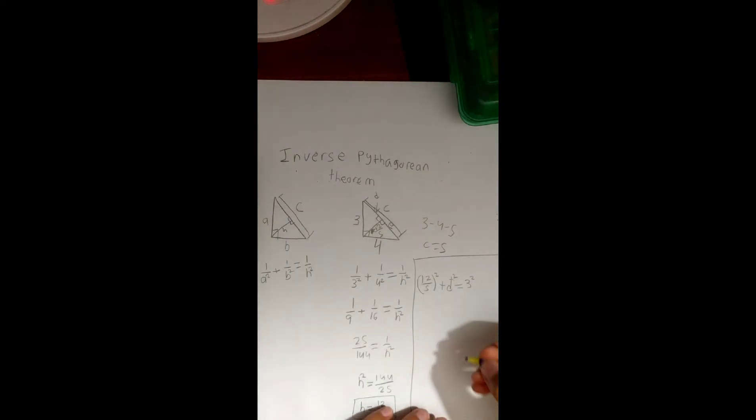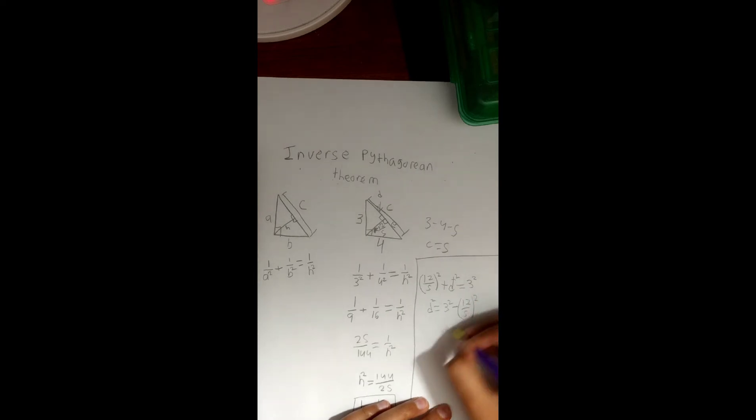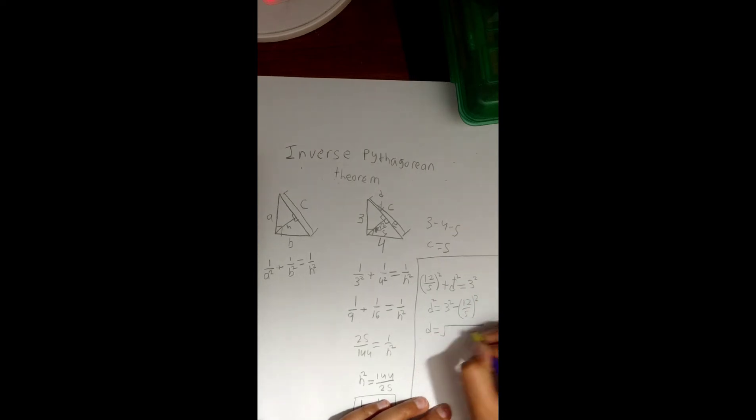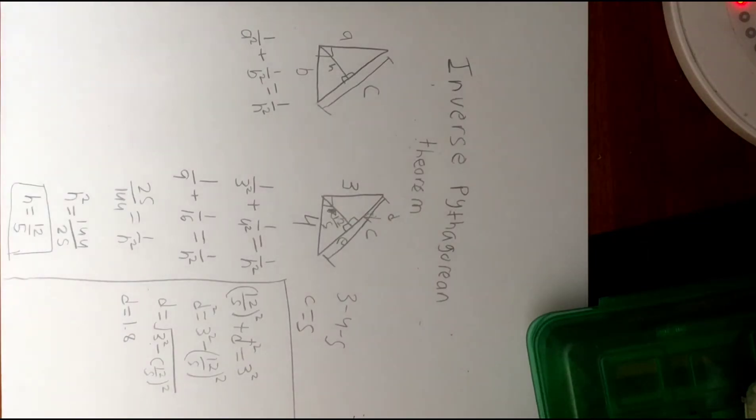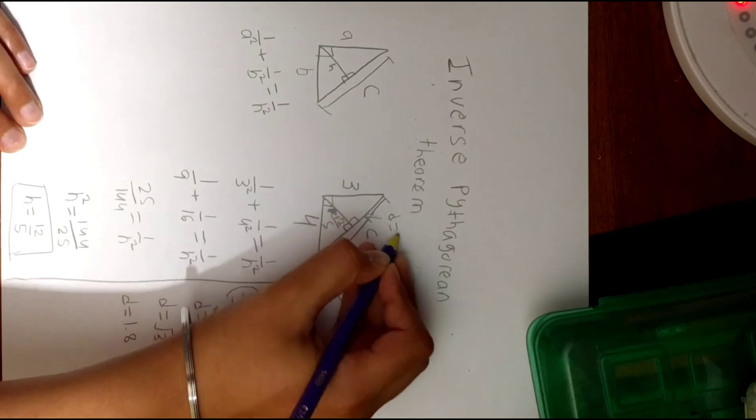And if you subtract 12 over 5 squared, you'd get d squared equals 3 squared minus 12 over 5 squared, and d equals the square root of 3 squared minus 12 over 5 squared. And to simplify that, we'd get an answer of... simplifying that value down, you'd get a value of d equals 1.8.